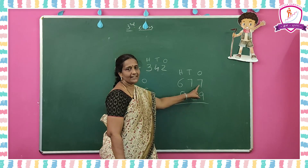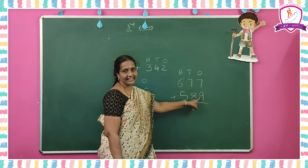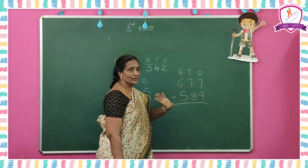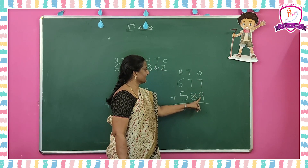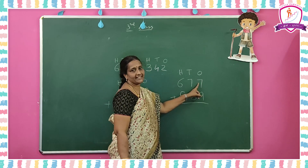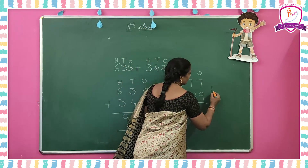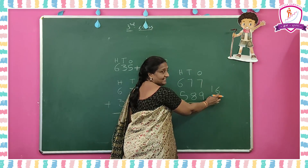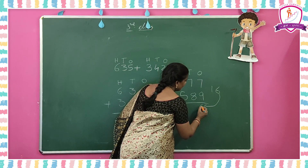Seven plus nine. To add 9 and 7 easily: take 1 from 7, then 9 plus 1 becomes 10, and 6 is remaining. 10 plus 6 is 16. We got 16. In 16, there is 1 ten and 6 ones. So take 6 in ones place and carry 1 to the tens place.